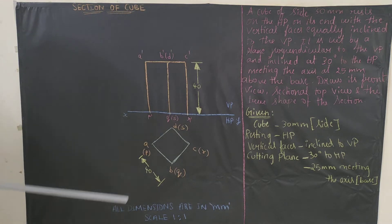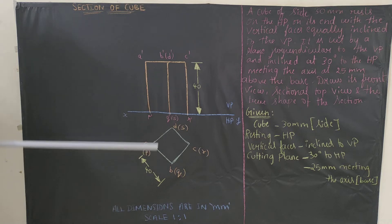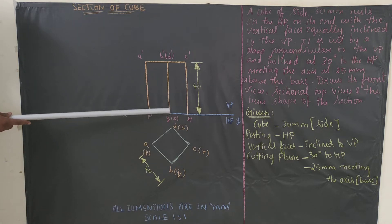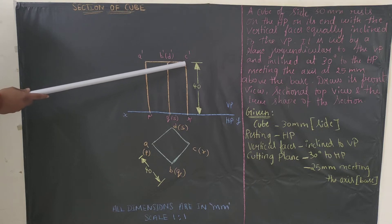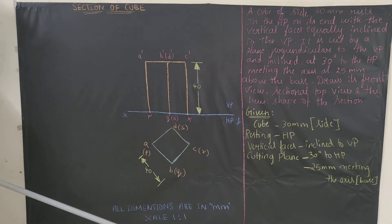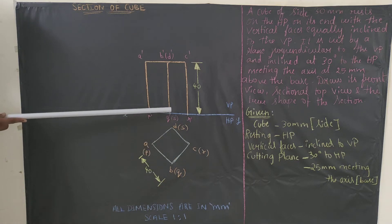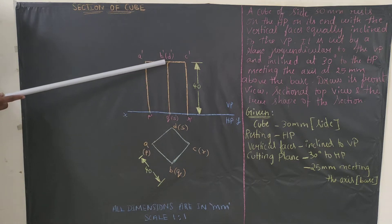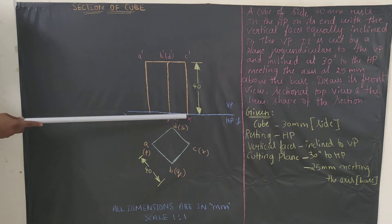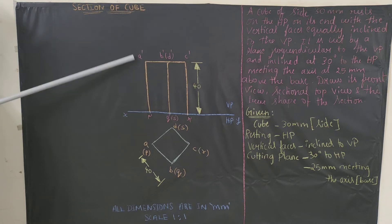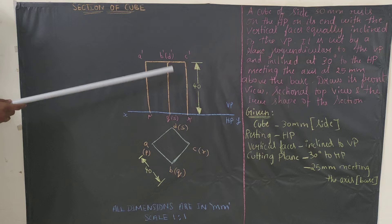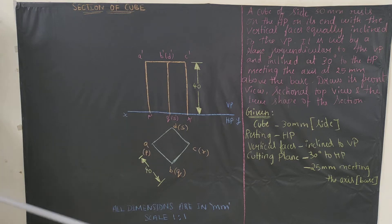The height of the cube is 30mm, so from the base, draw a vertical line for that height. Extend all lines and complete the rectangular box. Once the box is drawn, start writing the naming. When viewed from the front, you can see A, so mark A'. The topmost surface is ABCD and the bottom is PQRS. Complete the front view box with the correct height.